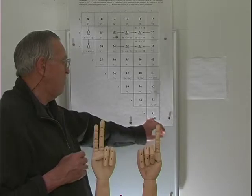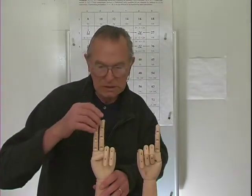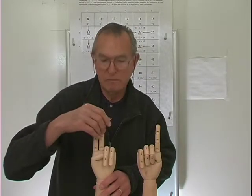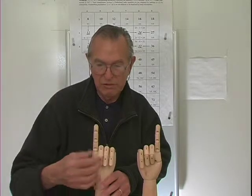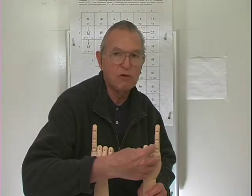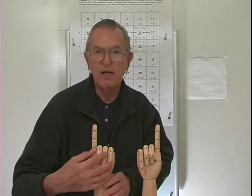Just one more: 9 times 9. This hand is already a 9 — there it is. 9 and 1 is 10, the tens complement. Multiply 1 times 1, I get 1 — that's the ones place. Then I add the closed fingers: in my right hand I have 4 closed fingers, in my left hand I have 4 closed fingers. 4 and 4 is 8. So 9 times 9 is 81, using tens complement multiplication.